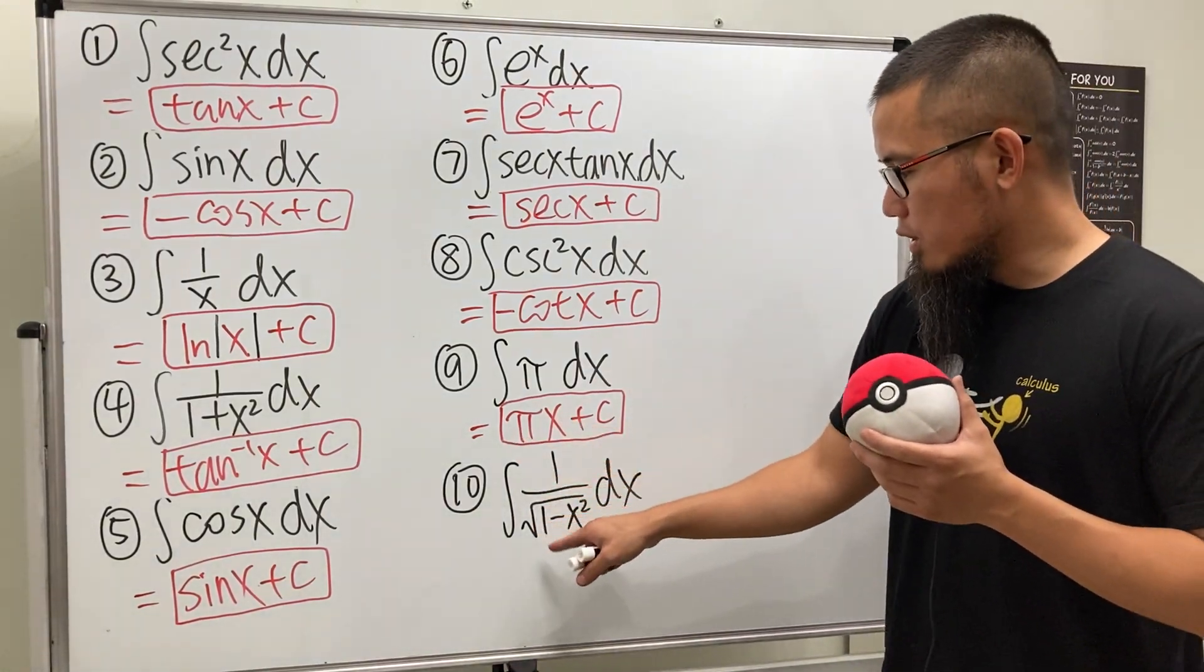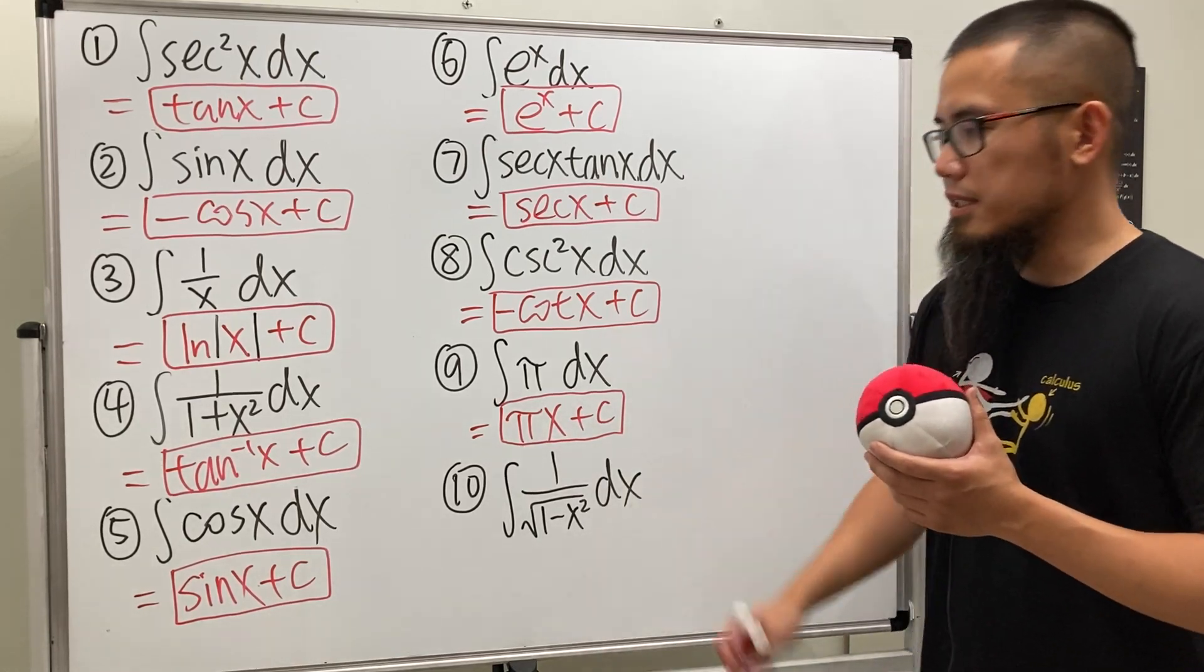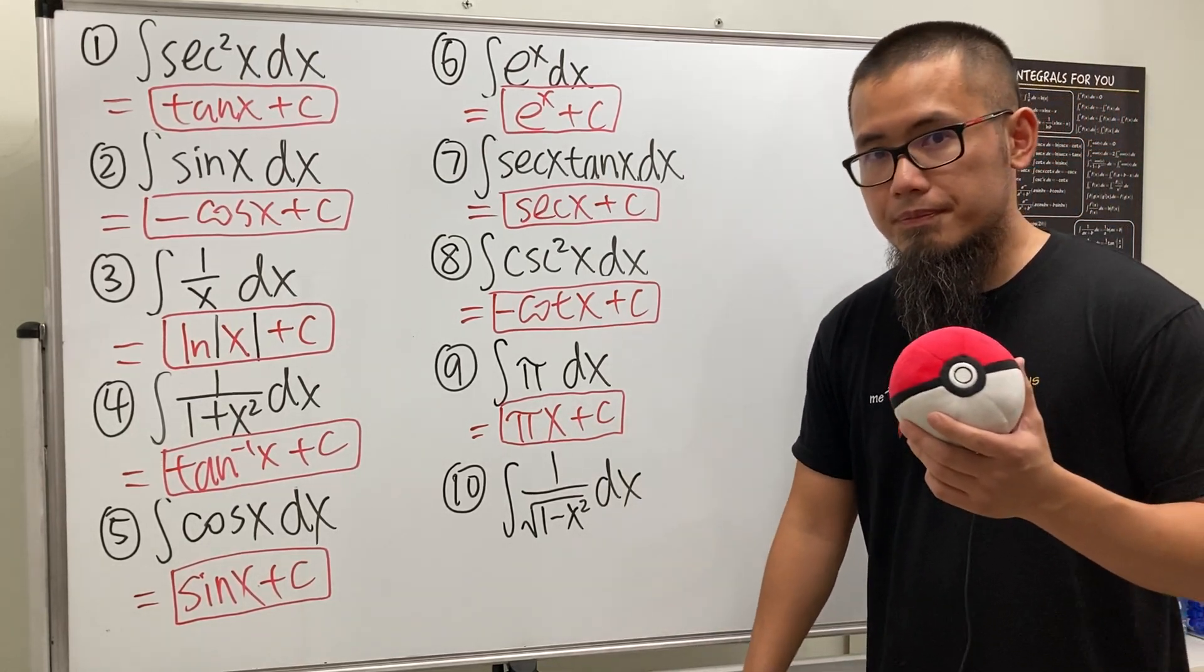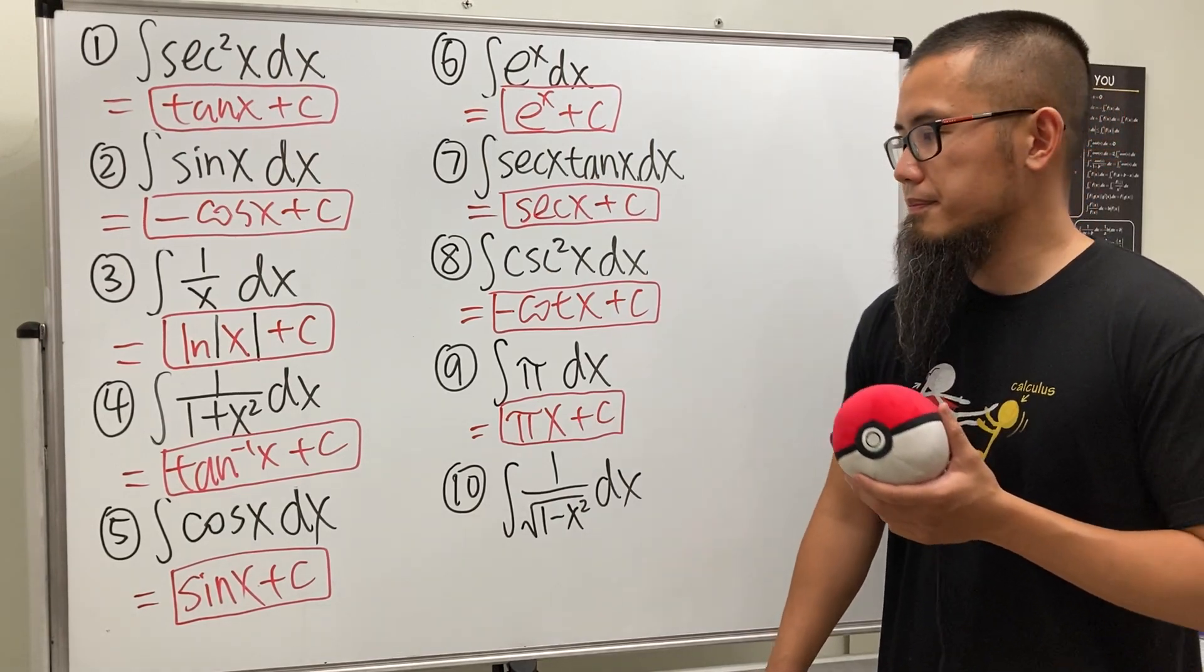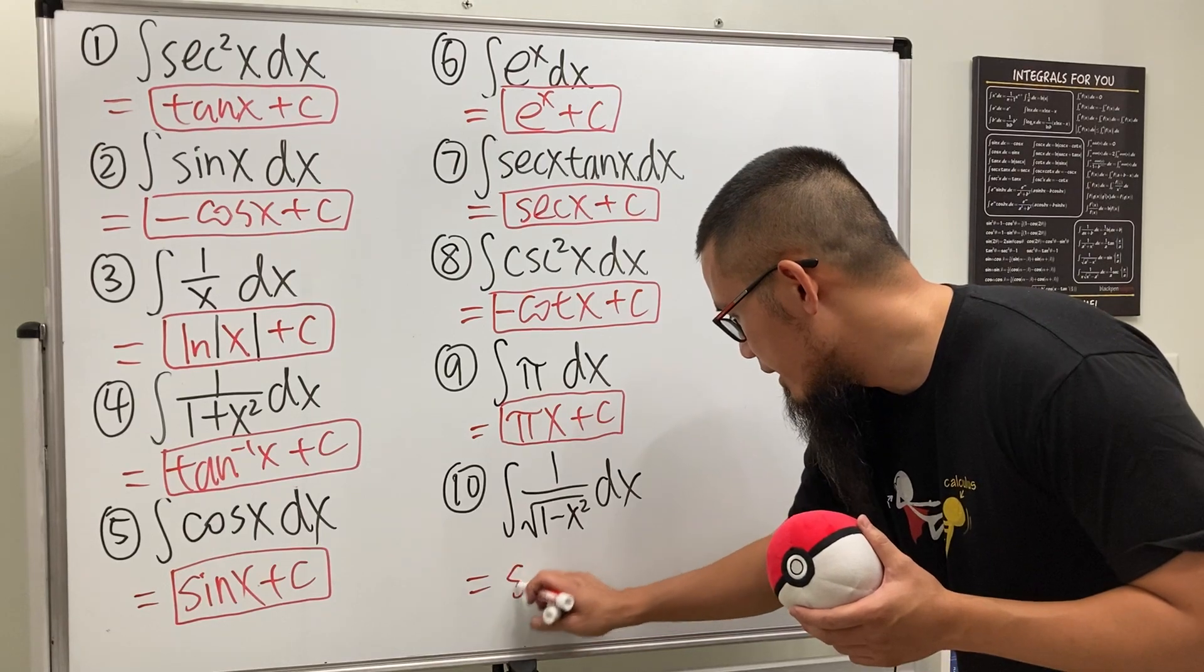Lastly, integral of 1 over square root of 1 minus x squared. The derivative of what function will give us this? I'll give you a little hint, it's an inverse trig function again. Sine, that's correct.